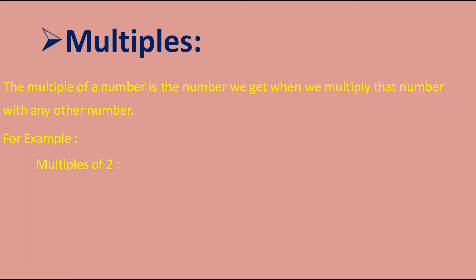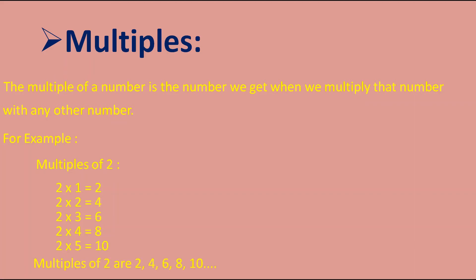Two ones are two, two twos are four, two threes are six, two fours are eight, two fives are ten, and so on. Therefore the multiples of two are 2, 4, 6, 8, 10, and so on. There are an infinite number of multiples.